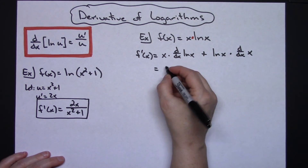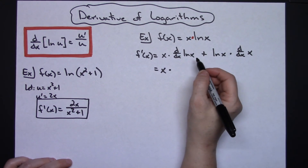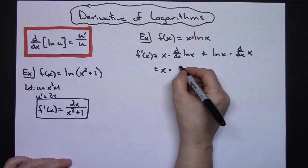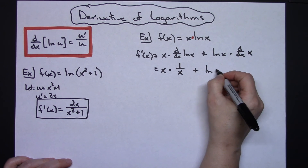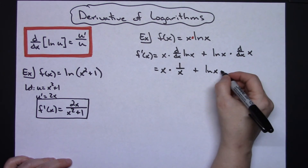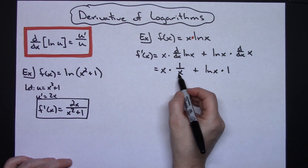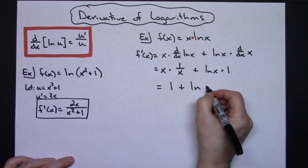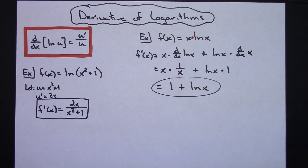Let's go through and actually do those derivatives. My u would be x, the derivative of x is 1, so that gives 1 over x — u prime over u — plus natural log of x, and the derivative of x is just 1. Cleaning that up: x times 1 over x gives me 1, plus 1 times natural log of x is just natural log of x. So that's a pretty straightforward derivative.